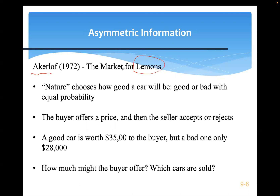Let's use a simple example. Imagine a car whose quality is determined by nature — it's good or bad with equal 50/50 probability. The buyer offers a price and the seller accepts or rejects. The buyer and sellers have different information. Let's say a good car is worth $35,000 and a bad car is worth $28,000. The question is: how much should the buyer offer, and which car will be sold?